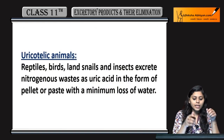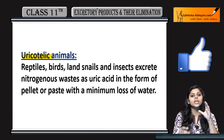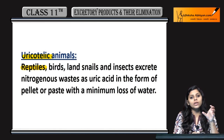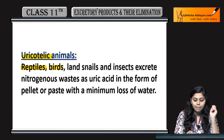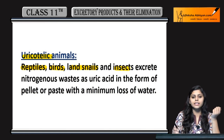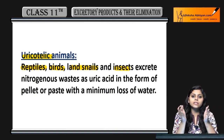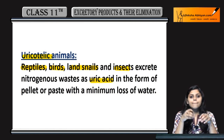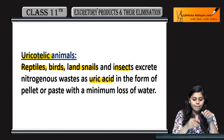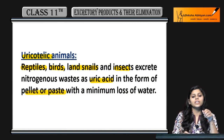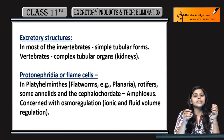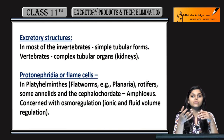Uricotelic animals excrete uric acid as nitrogenous waste. Examples include reptiles, birds, some land snails, and insects. They excrete nitrogenous waste in the form of pellets or paste, jiski wajah se minimum loss hota hai water ka. Yeh ek adaptive feature hai terrestrial organisms ki.